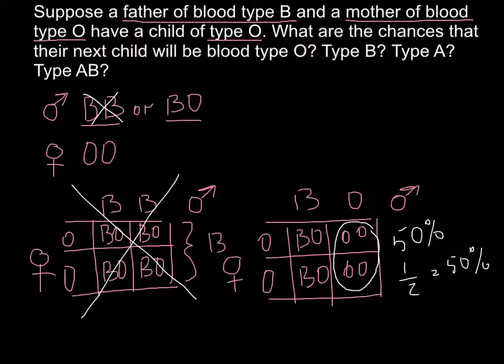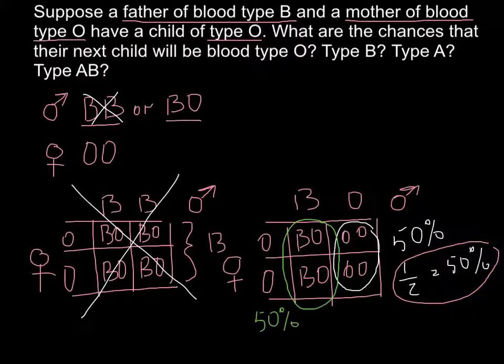So the next question, we can circle this answer. The next question: what are the chances for their child to be blood type B? And as you see here, this genotype would produce blood type B. This is also 50% chances for the next child to be blood type B. So this is the second answer.